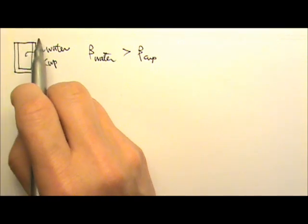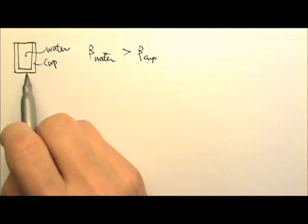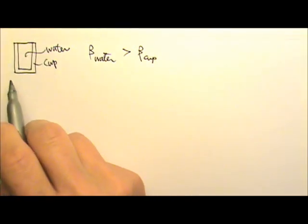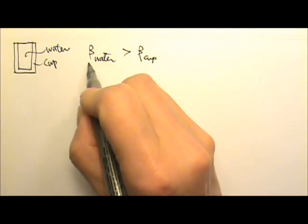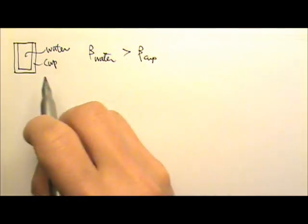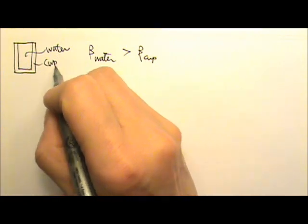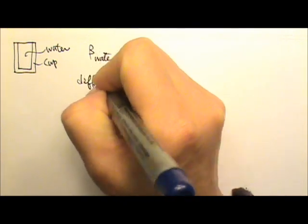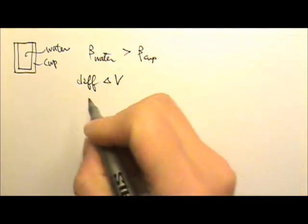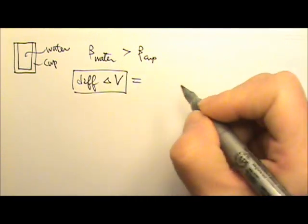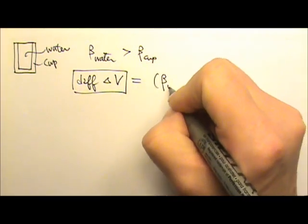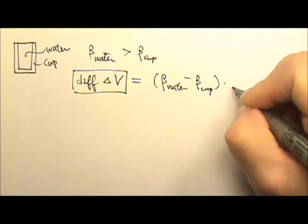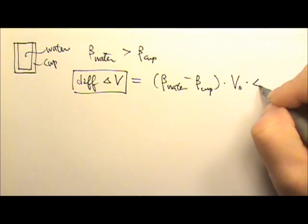If we want to find how much water overflows when we heat this whole thing up, or how much water we can add into the cup when we cool this whole thing down, what we can do is to look at the difference of beta. Because the reason why we have water overflow, or we have space to fill in water, is because they have different volume expansion. Therefore, this will be the beta difference, the larger beta minus the smaller beta, times the original volume, times the changing temperature.